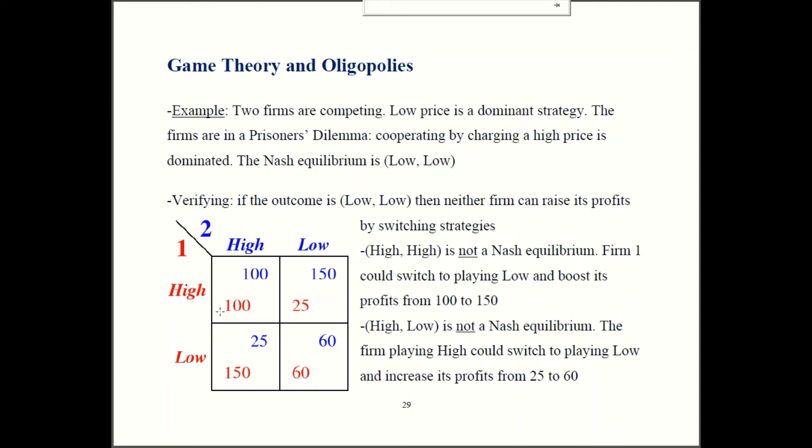Let's verify. So could firm one profit by changing a strategy? The answer is yes. So if firm two is still playing high, but firm one switches to playing low, firm one's profit will be 150. Previously, they're getting just 100. So firm one gains when they change strategies. So if changing strategies is profitable, then that old outcome is not stable.